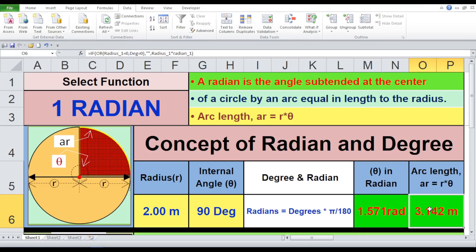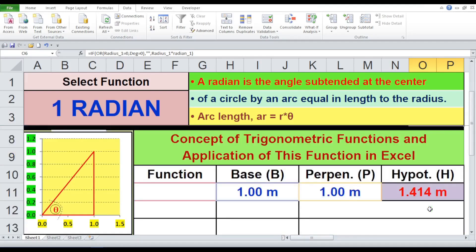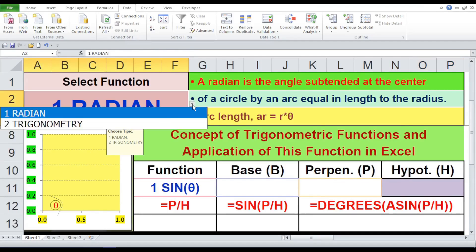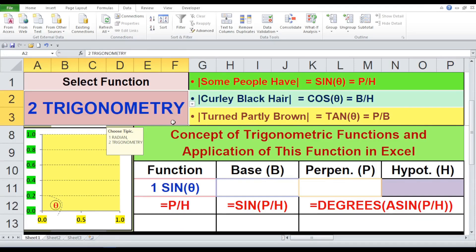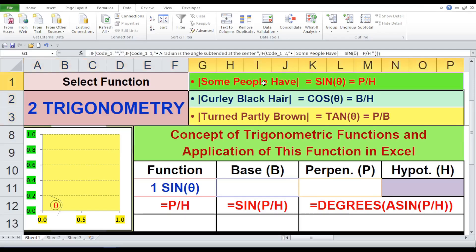Let's move to the trigonometry sheet by scrolling down. By the help of drop-down menu, I am changing the topic from radian to trigonometry. Trigonometry is a branch of mathematics that studies the relationships between the angles and sides of triangles. It focuses primarily on right-angled triangles and involves functions such as sine, cosine, and tangent, which relate the angles of a triangle to the ratios of its sides.